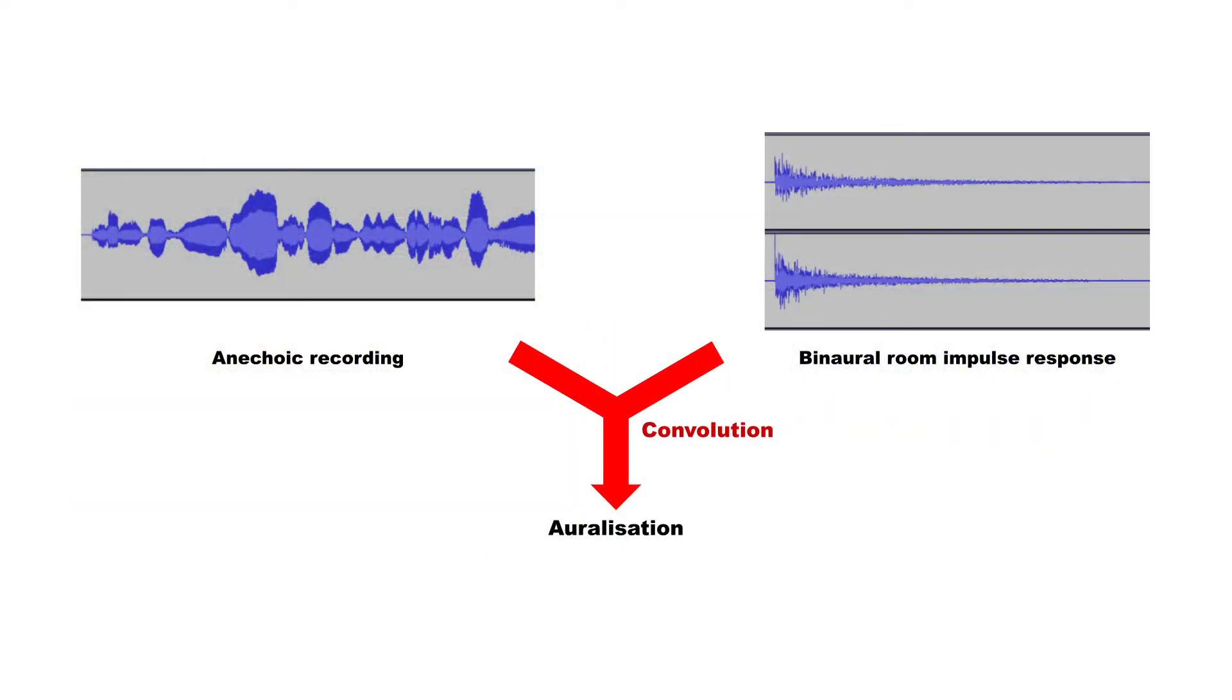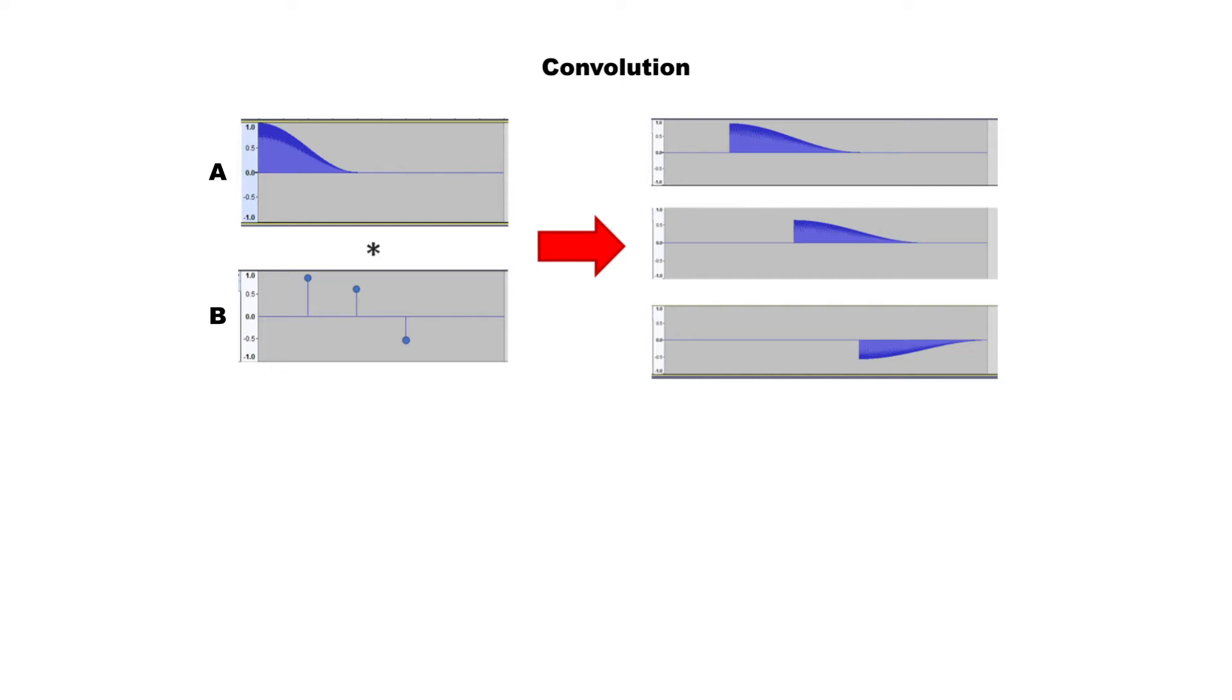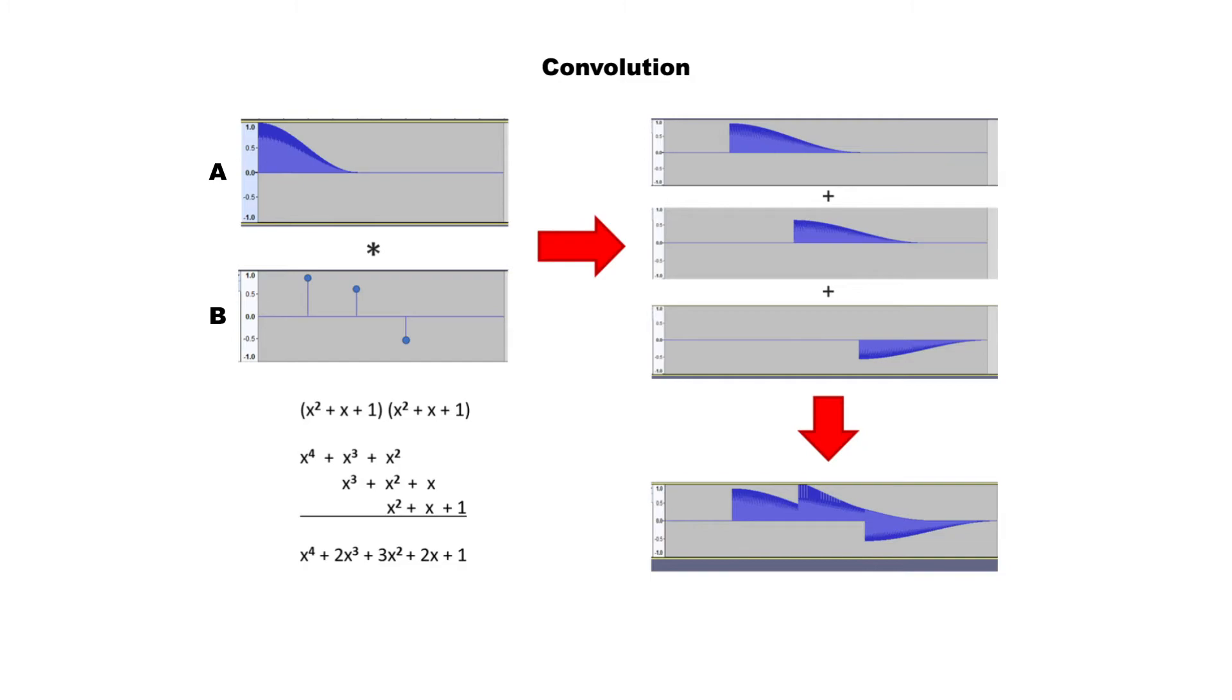The anechoic recording and the binaural room impulse response are combined through a mathematical operation called convolution. It consists of first multiplying all samples in signal A times all samples in signal B, adding time delays according to the time of each pair of samples, and summing all the resulting signals together. This is the same principle as a multiplication of two polynomials, where the variable's power can be related to the time delay in convolution.